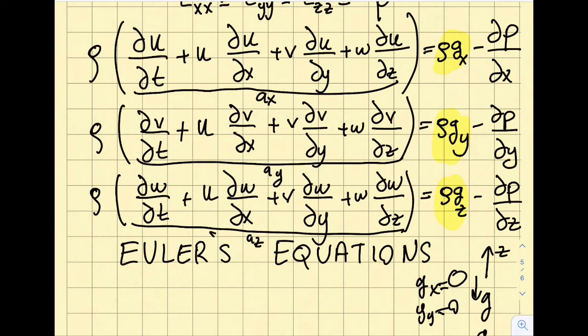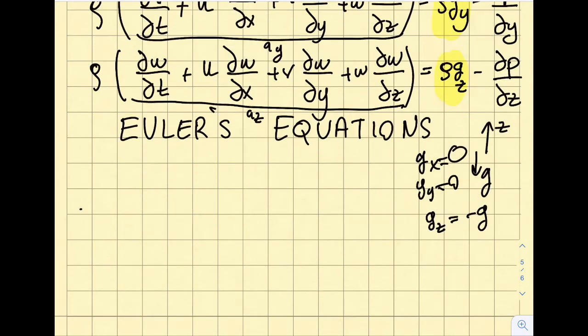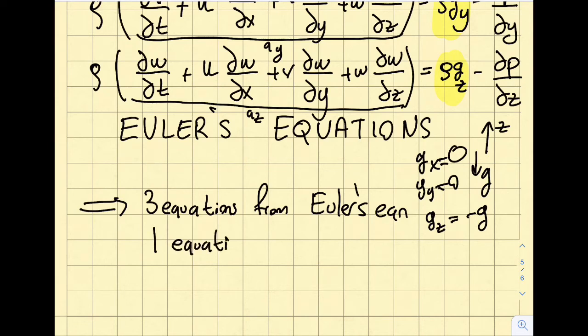In fluid mechanics, the left-hand side equals ma divided by volume, which is ρ times acceleration. I have three equations from Euler's equation. I also have one more equation from conservation of mass, which doesn't have any direction - it's a scalar equation as opposed to a vector equation. So I have four equations.